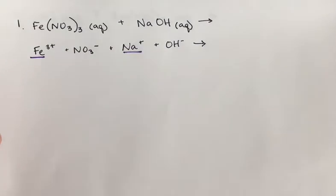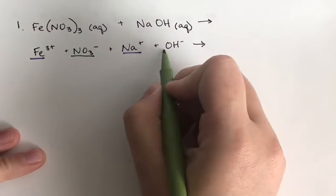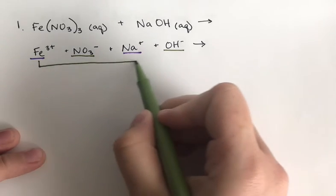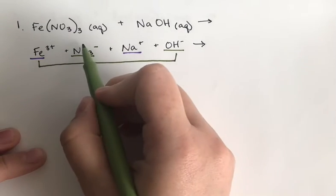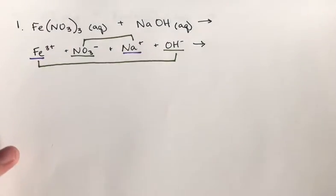When predicting products, I'm going to underline my cations with one color, underline my anions a different color, and then I'm going to trade. So this cation is now going to go with this anion and vice versa.